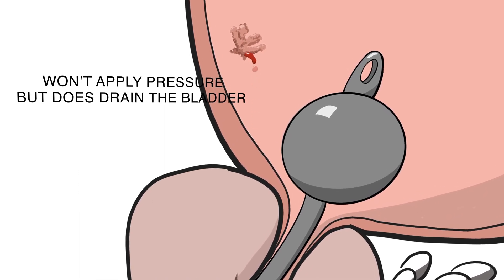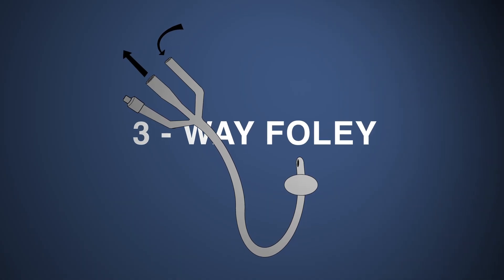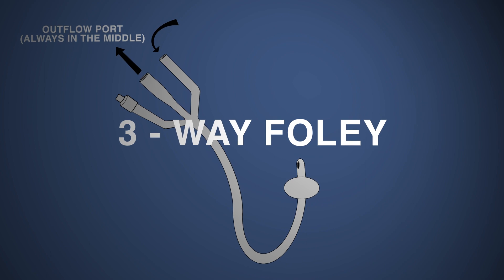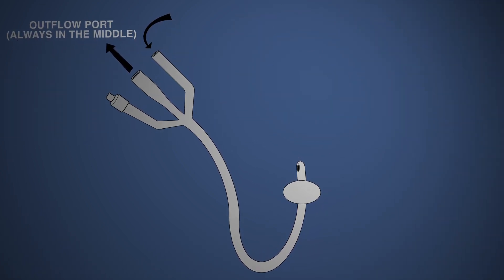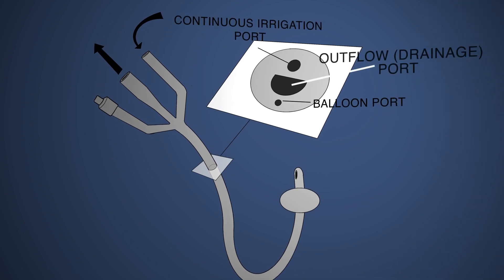Next, what is a three-way Foley catheter? A three-way catheter refers to the balloon port, a drainage port, and a third port on the catheter for continuous bladder irrigation.